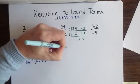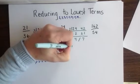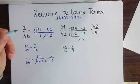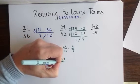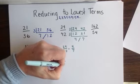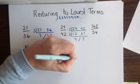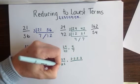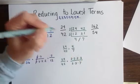So 24 forty-seconds is equivalent to 4 sevenths. The textbook method again for this problem would show 24 forty-seconds factoring into 2 times 2 times 2 times 3 and 42 factoring into 2 times 3 times 7.